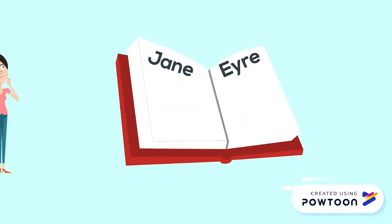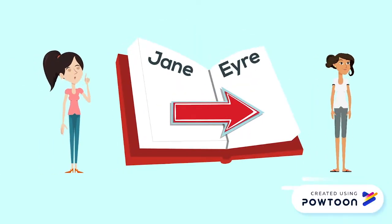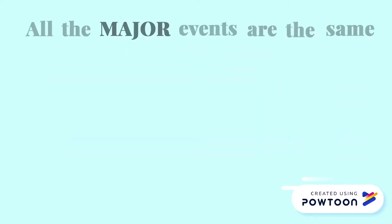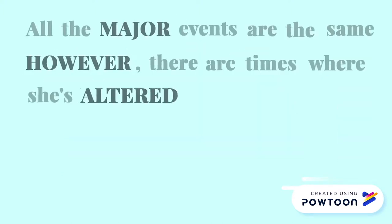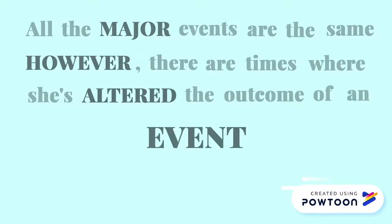Essentially, Jane Eyre is the story of what Charlotte Bronte wanted her life to become. All the major events are the same; however, there are times where she altered the outcome of an event so it plays out the way she wanted it to in her life. Then there's Jane, the brave outspoken woman Charlotte wished she could have been. Because it was unthoughtful for a woman to be adventurous or opinionated with ideas, they were controversial to society. Charlotte transformed herself into Jane and uses her as a conduit to express her beliefs and represent herself.